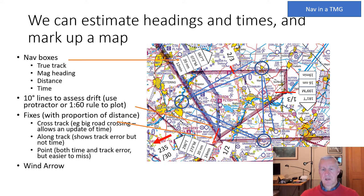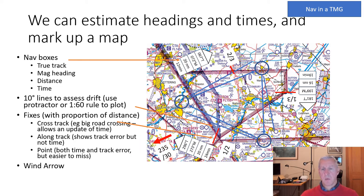A fix such as an airfield gives an accurate fix in terms of both angle and distance along track, though it may be difficult to see if you're off track. A road crossing your track — like the A1 — won't help much with track error but gives an accurate time check. Different fixes do different things. A wind arrow marked on the chart showing the forecast wind at your cruising level is also useful.